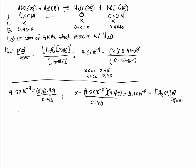So the pH would be negative log of 5.1 times 10 to the negative 4, and you should get a pH of 3.3.